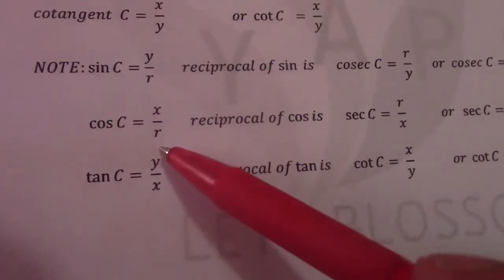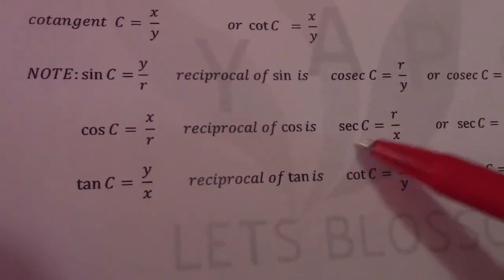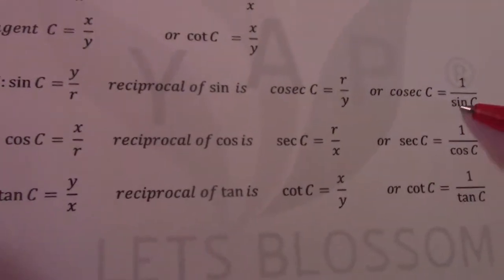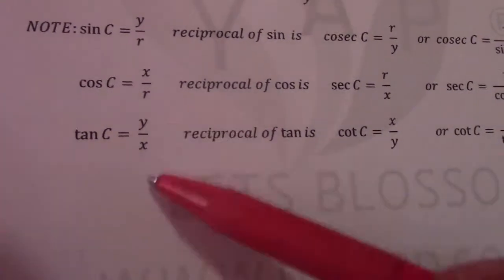Same thing, you see cos c is x over r. Reciprocal of cos is sec. Sec c equals r over x, or sec c equals 1 over cos c.